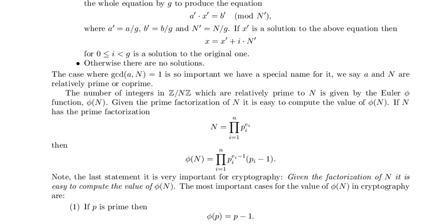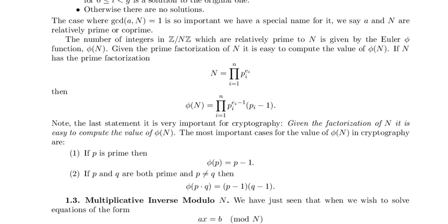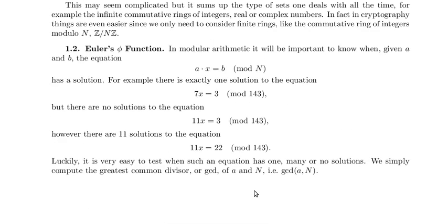The most important cases for the value of phi of n in cryptography are: first, if p is prime, then phi of p equals p minus 1 — there are p minus 1 numbers relatively prime to the prime p. Second, if p and q are both prime and p is different from q, then phi of p times q equals p minus 1 times q minus 1. That's the Euler phi function.